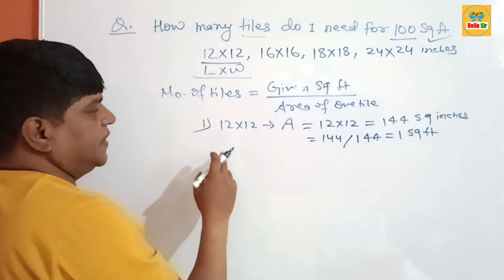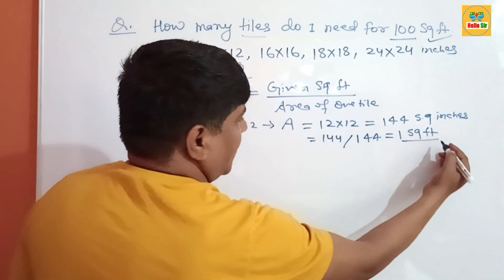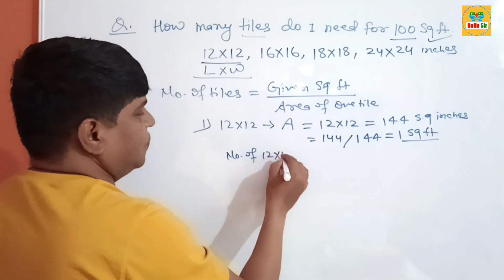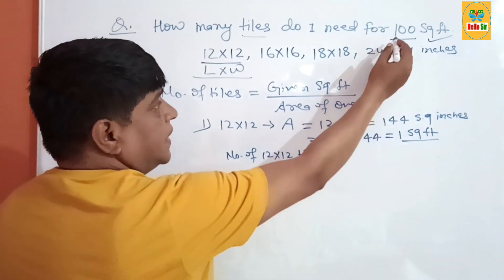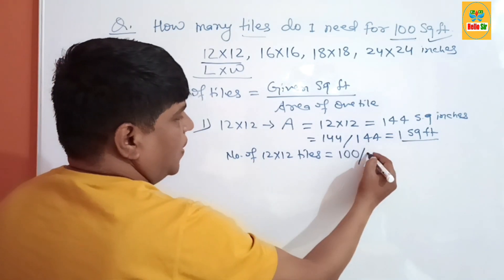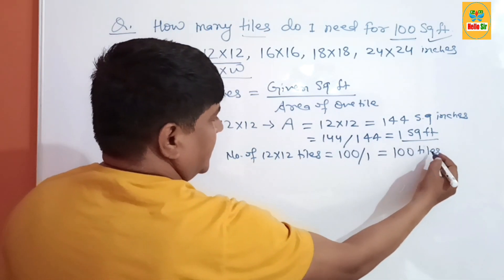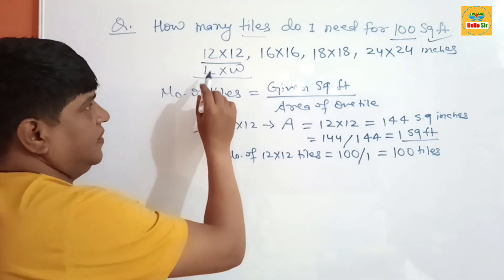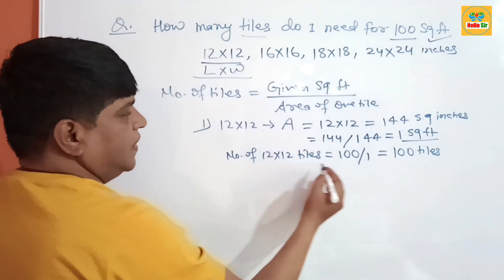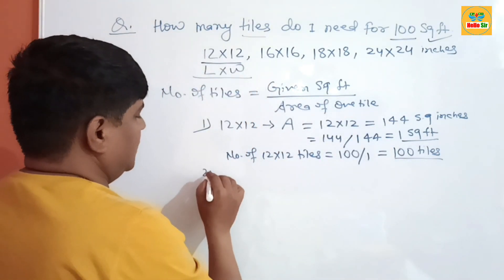This comes to 1 square foot area. It means a 12-inch by 12-inch tile contains 1 square foot of area. If you want to calculate the number of tiles needed for 100 square feet, simply divide 100 square feet by 1 square foot. This comes to 100 tiles. So if you select 12 by 12 inch tiles to cover a 100 square foot area, you will need 100 tiles.